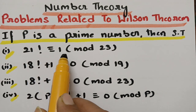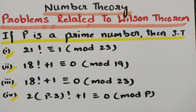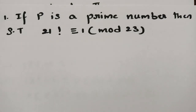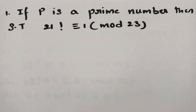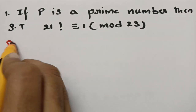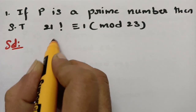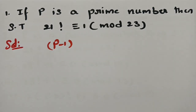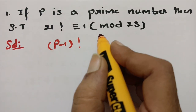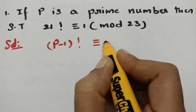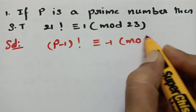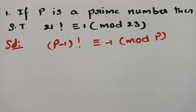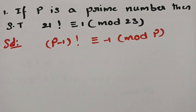According to Wilson's theorem, (P−1)! ≡ −1 (mod P). This is the proof we have already done.